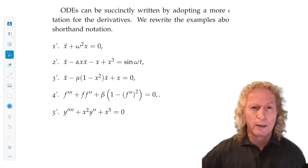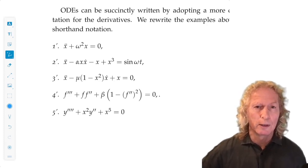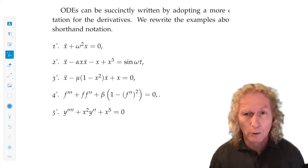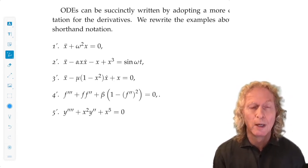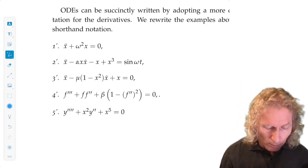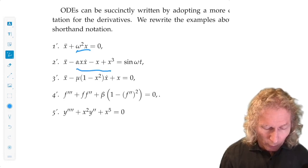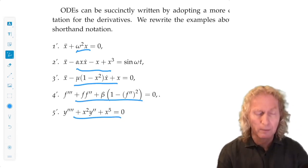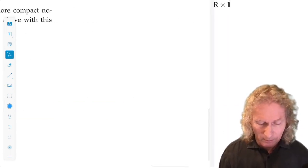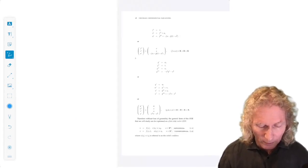The way we write these as first order vector ODEs is that we redefine all the derivatives below the highest order as new dependent variables, and we move everything other than the derivatives that are to the left of the equal sign to the right hand side. It's easiest to see that with examples.